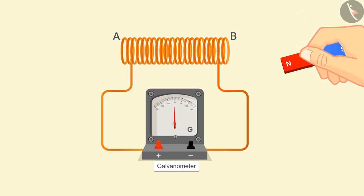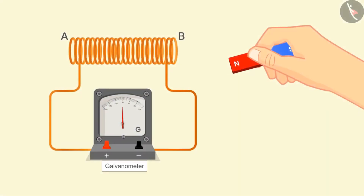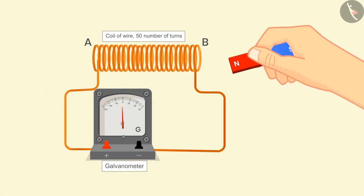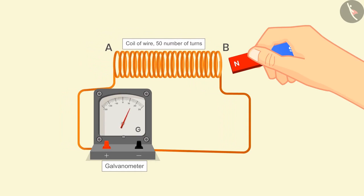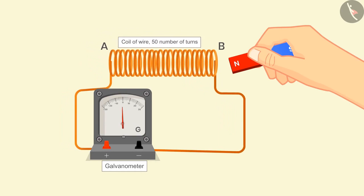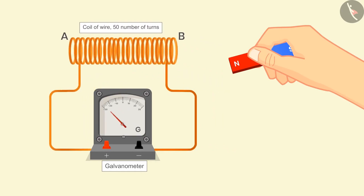This shows the current is flowing in the opposite direction in the circuit. In the second case, we keep the magnet stationary and move one end of the coil towards the north pole of the magnet. Then the needle will show deflection on the right-hand side, and will show deflection on the left side if we move the coil away from the magnet.